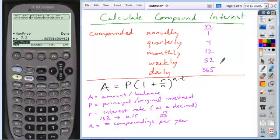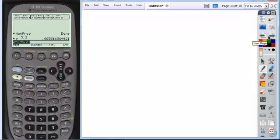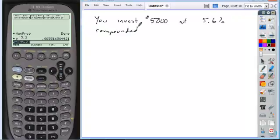Finally the last variable t is the time and that's done in years. I'm going to leave this key up here, but let's walk through a problem involving compound interest. You invest $5,000 at 5.6% compounded quarterly. What is the value after six years?